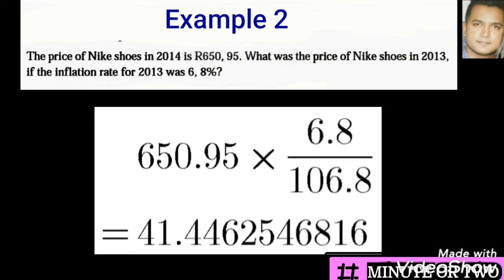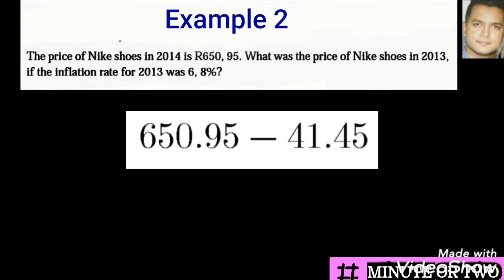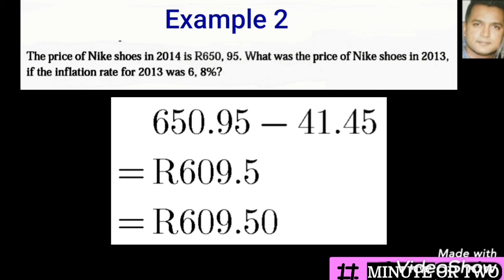I have presented the long decimal answer in this next step to show the examiner that I know to round off to two decimal places because we are dealing with money. The R41.45 represents the amount the shoes were raised by to get to the new amount of R650.95. So all we have to do is subtract R41.45 to get the old price, which finally brings us to R609.50 — the old price of the shoes in 2013, rounded to two decimal places.